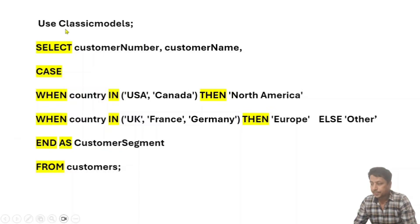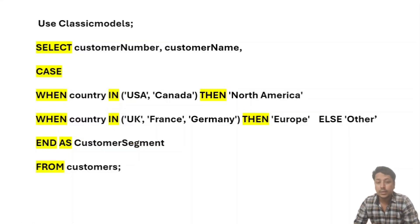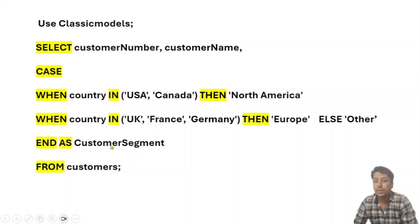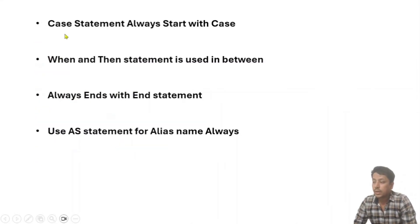You can see the Excel formula gives results like: India is Asia, China is Asia, USA is North America, Canada is North America, and the rest show Other. The SQL query I have written uses: SELECT from customers, and uses CASE with WHEN country IN ('USA', 'Canada') THEN 'North America', WHEN country IN ('UK', 'France', 'Germany') THEN 'Europe', ELSE 'Other', END AS customer_segment. Three key points: CASE always starts with CASE, uses WHEN/THEN in between, and always ends with END.